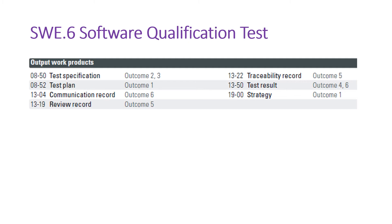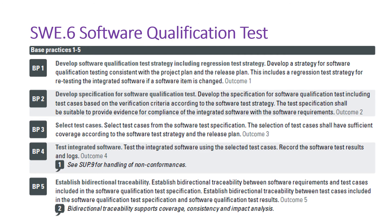The traceability record is your bi-directional traceability record, recorded either in a traceability matrix as an Excel file, or in a traceability tool like Polarion or any other ALM tool as well.